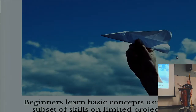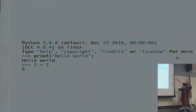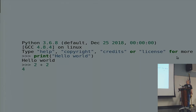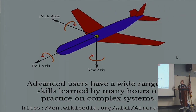Beginners learn a lot of basic concepts using a subset of skills on limited projects. All you need to do to become a programmer is type 'print hello world,' do a little addition and subtraction, and there you go — you're a programmer. But there's a difference between that and becoming an advanced user. Advanced users have a wide range of skills learned by many hours of practice on complex systems.